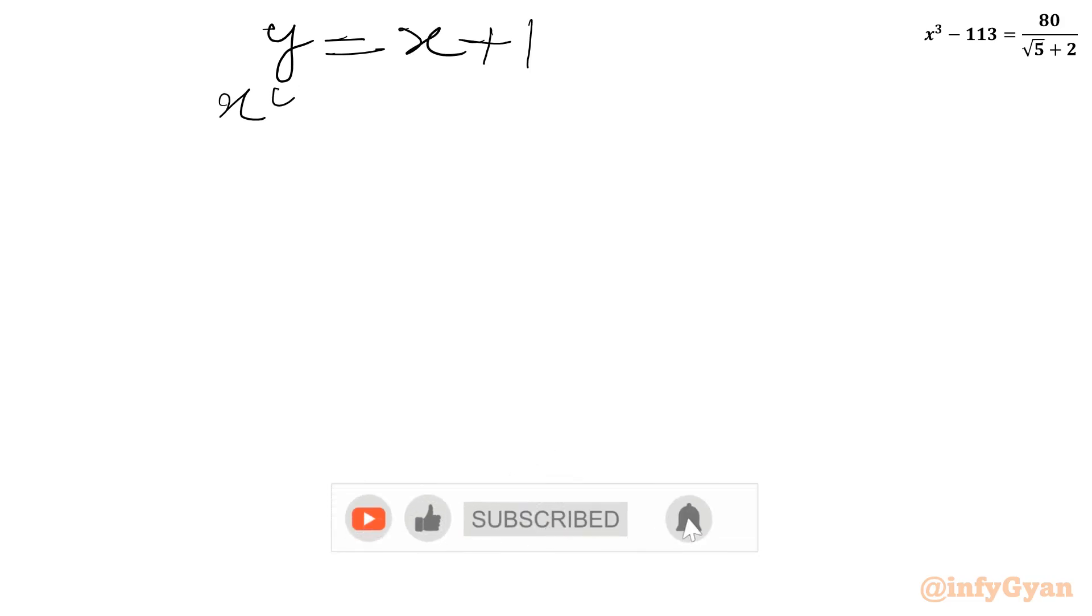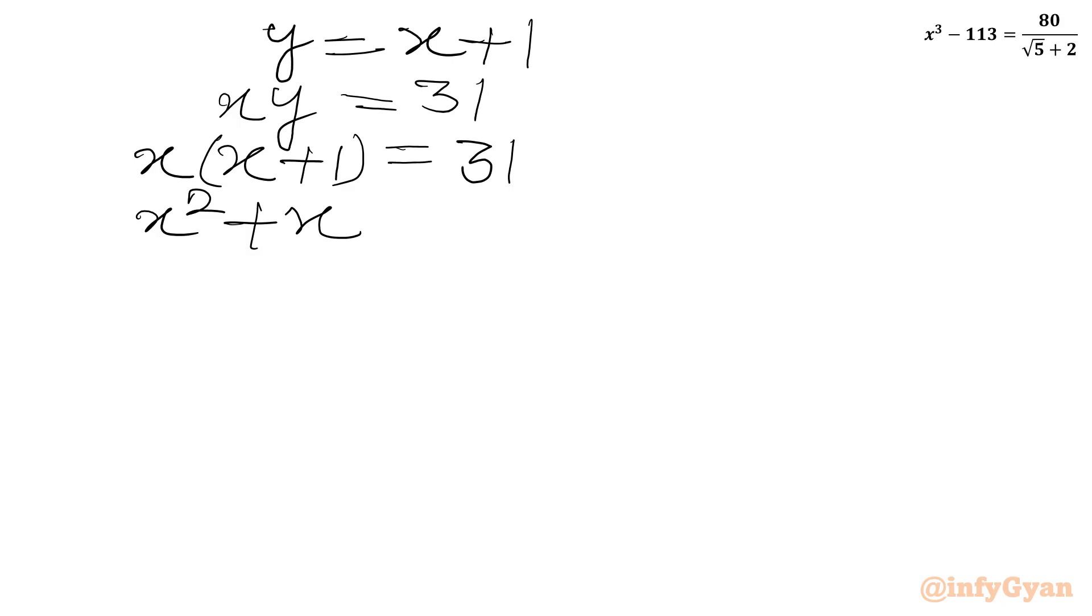Our equation second was xy equal to 31. So in place of y, we will write x plus 1 equal to 31. Or x square plus x minus 31 equal to 0. Equation is quadratic. We can use quadratic formula. As per formula, minus b plus minus square root of b square minus 4ac over 2 times a.